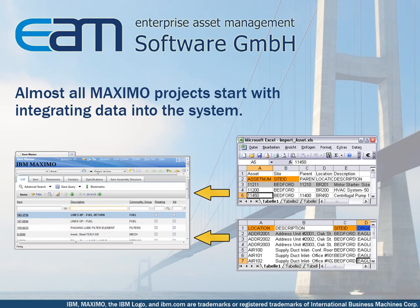Manual data entry is not only expensive and time-consuming, but it also involves the risk of input errors. Especially during the rollout of Maximo, this often leads to cost-intensive delays. But also in the daily business, the data exchange between Maximo and Excel plays an important role. Here are some examples: first, the import of additional data, for instance during an expansion of the system, the purchase of assets or the specification of data. Second, the export of data to make them available for other departments or companies. Third, the export of data to enable complex analysis in Excel. Fourth, the export of data to Excel, the revision of the data in Excel and the re-import to Maximo.